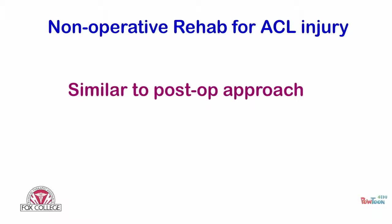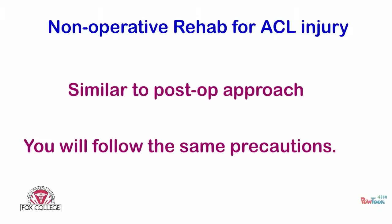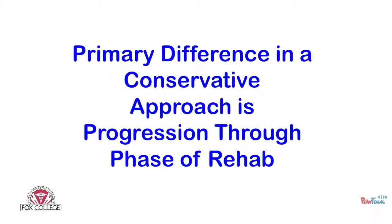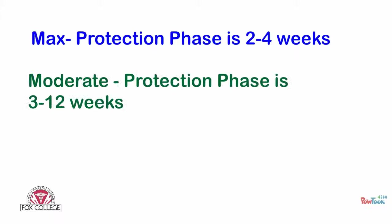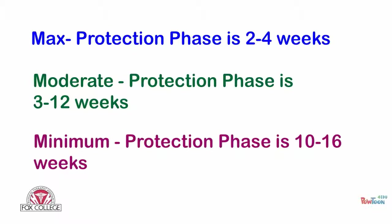The non-operative rehab is similar to the post-op approach and follows the same precautions. The primary difference in a conservative approach is the progression through the phases of rehab. The maximum protection phase is generally 2 to 4 weeks, moderate protection is 3 to 12 weeks, and minimum protection is 10 to 16 weeks.